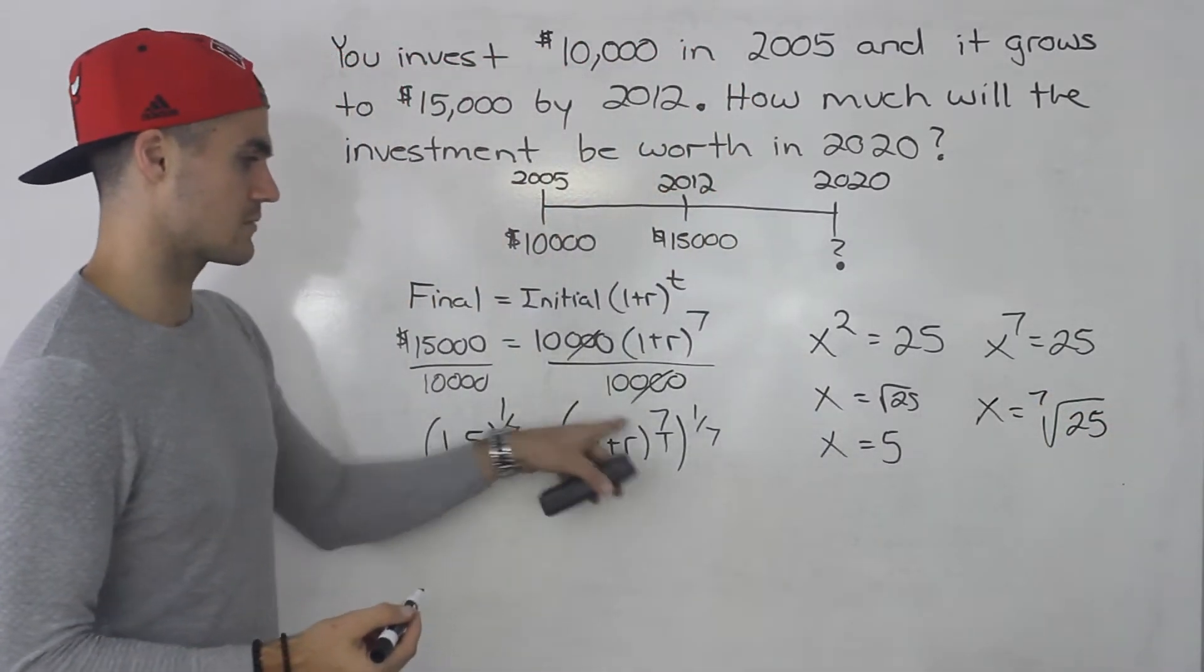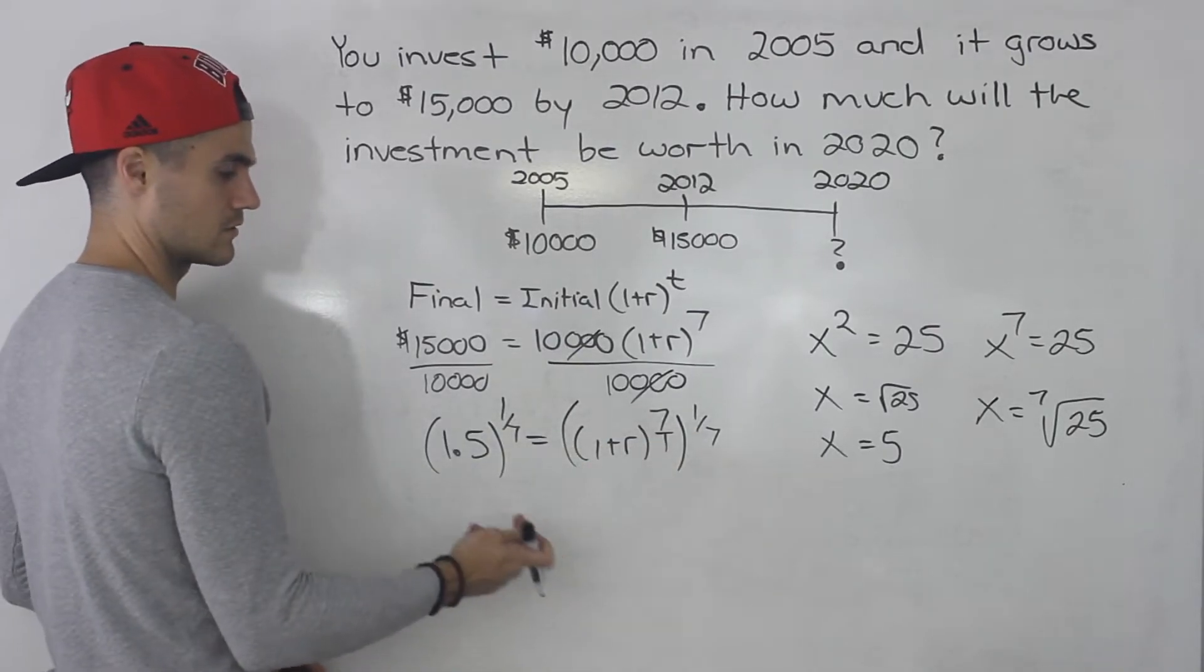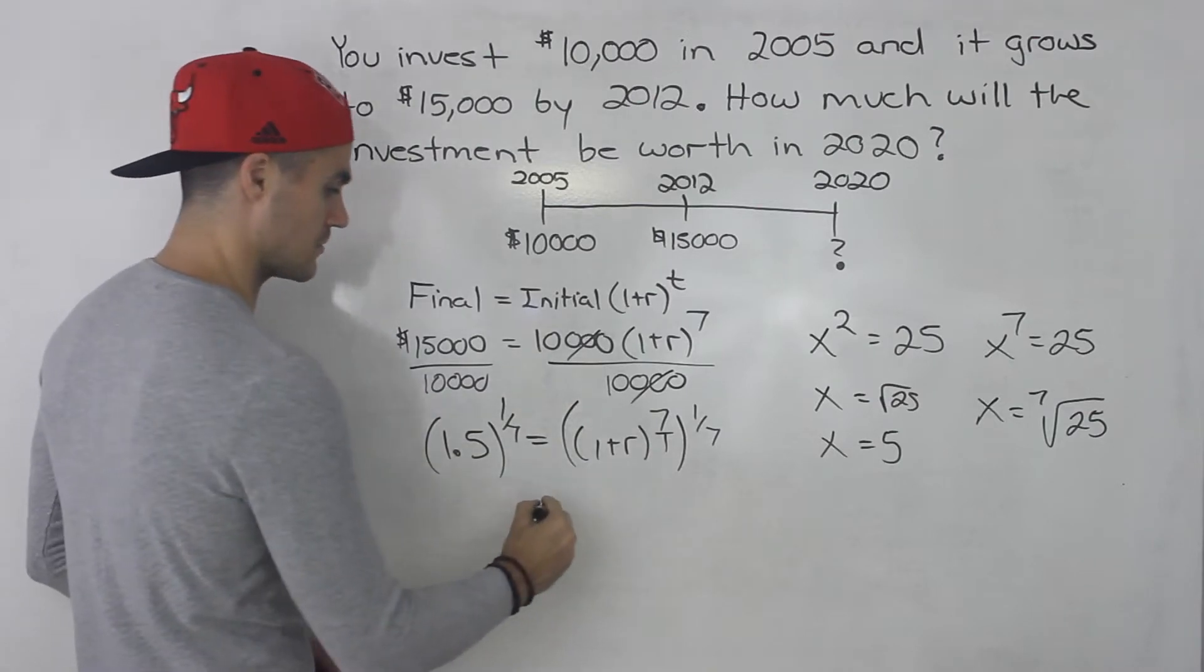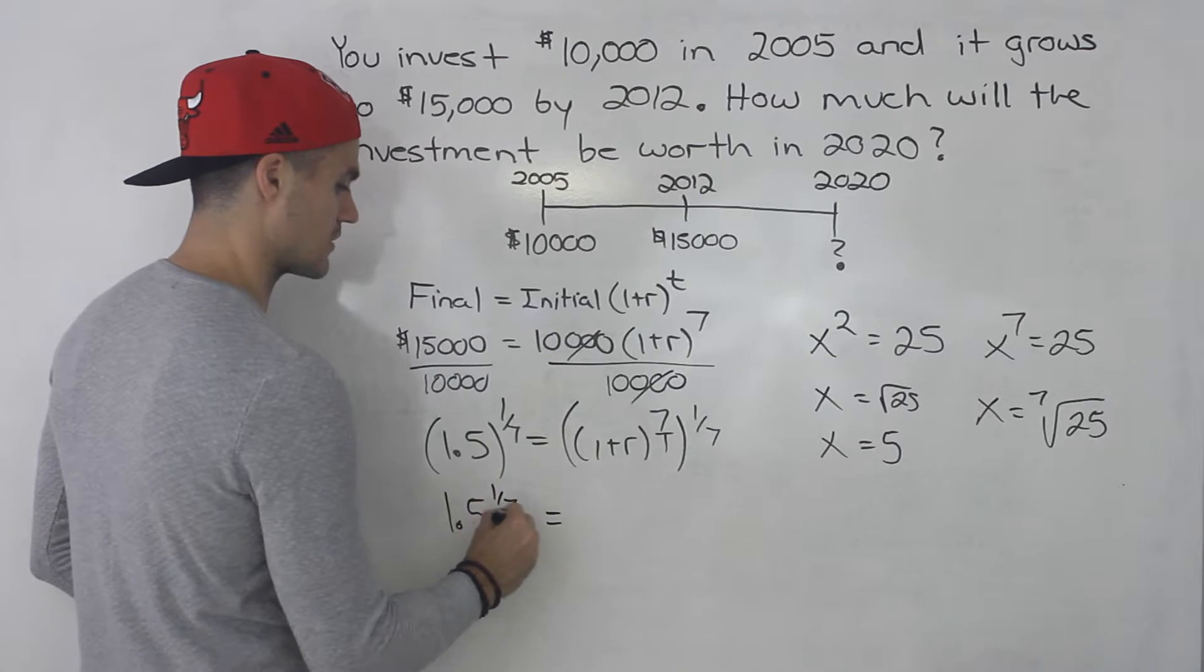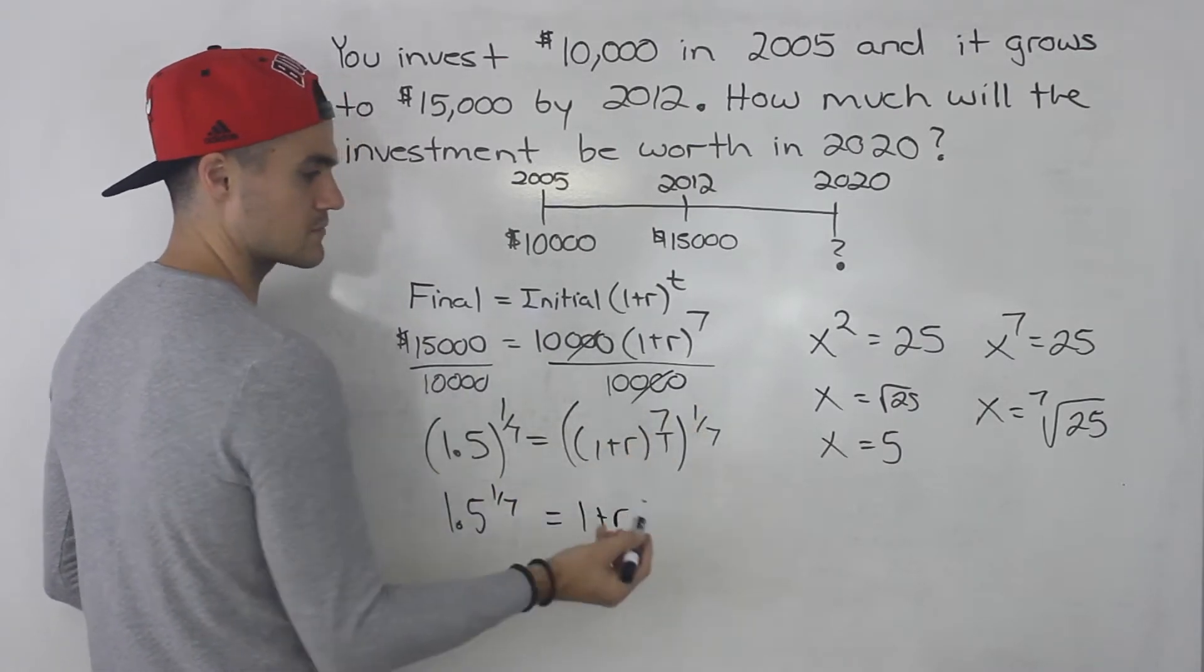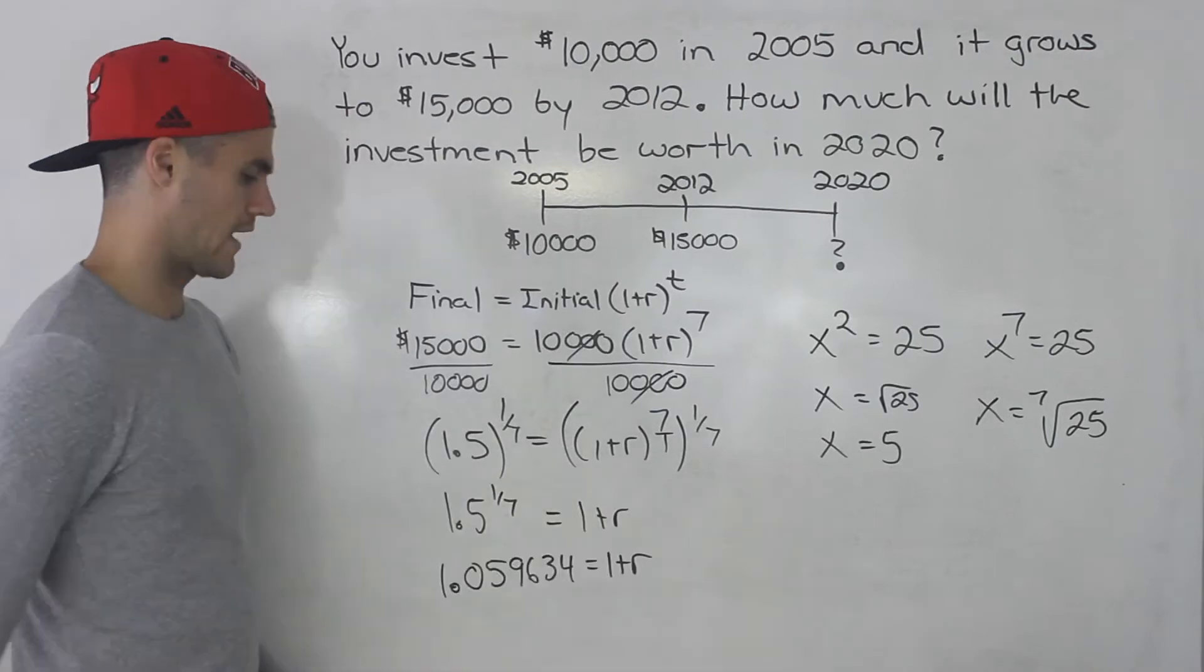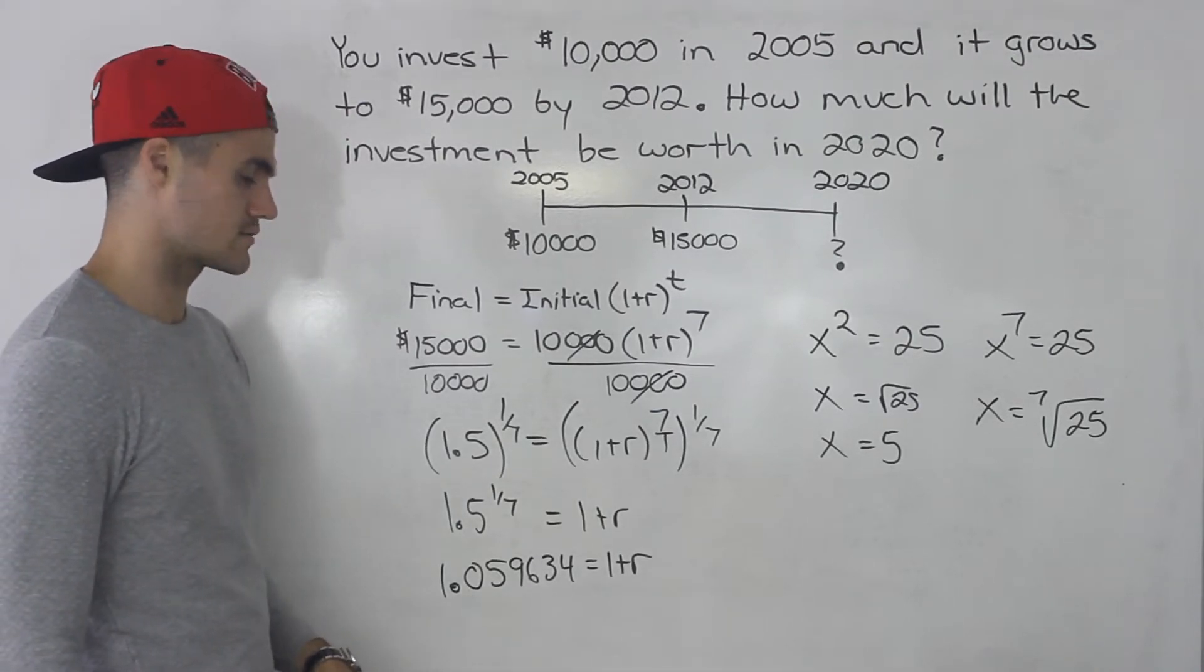Same thing here. Something to the power of 7. So to get rid of that exponent we're just taking the seventh root of both sides. So basically 1.5 to the power of 1 over 7 is going to be (1 plus r). Because 7 over 1 times 1 over 7 just gives us 1. And when you do that in your calculator you end up getting 1.059634.